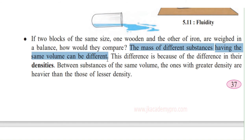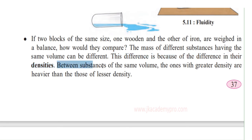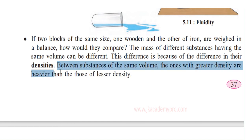The mass of different substances having the same volume can be different. We took the same size blocks but they weighed differently — the mass was different. This difference is because of the difference in their densities — how tightly or loosely the molecules are packed. Between substances of the same volume, those with greater density are heavier. Wood is lighter than iron because wood is less dense.